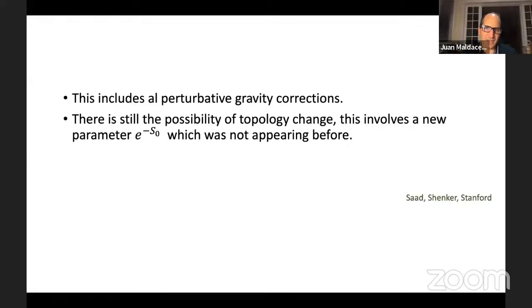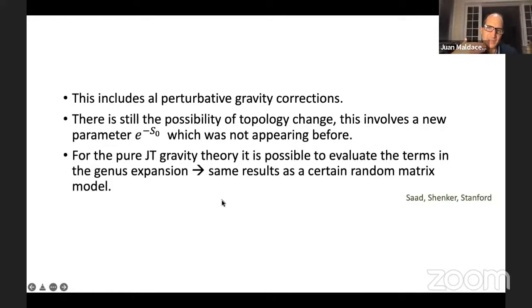There are also non-perturbative corrections involving topology change, at a cost of e^{-S₀} — that parameter φ₀ we had before. For pure JT gravity it's possible to evaluate all terms in the genus expansion, as done in a beautiful paper by Saad, Shenker, and Stanford, and the results match a certain random matrix model.